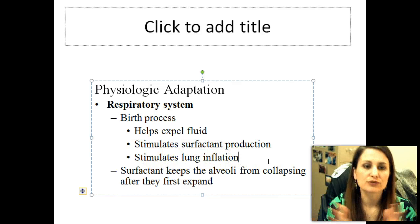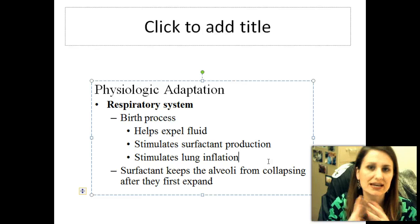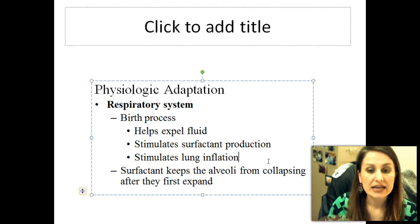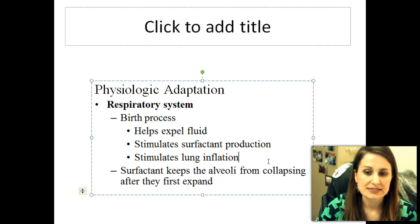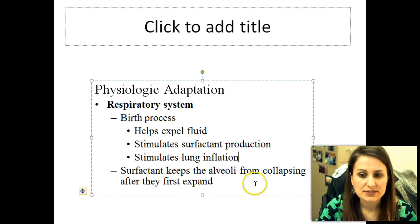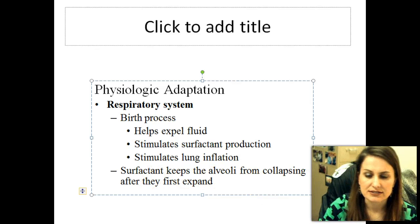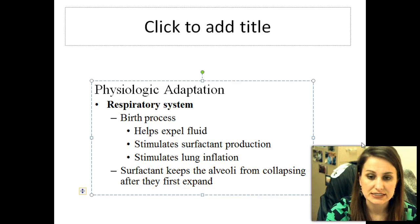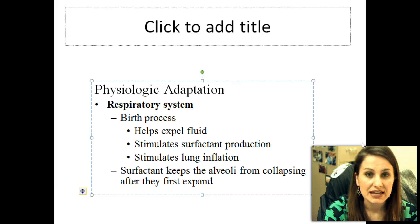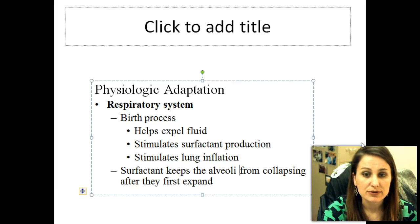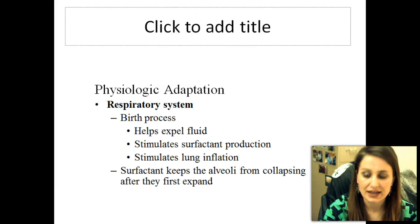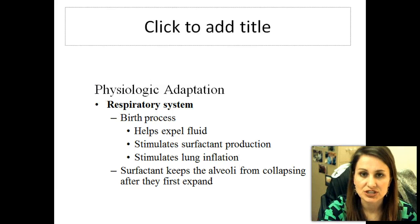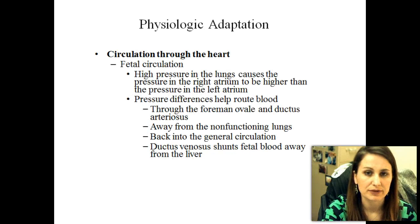The vaginal squeeze is going to squeeze out any of that excess fluid. It's also going to stimulate surfactant, and surfactant keeps those alveoli from collapsing after they first expand. If a baby was premature, they might actually give them shots of surfactant to help with lung maturation.